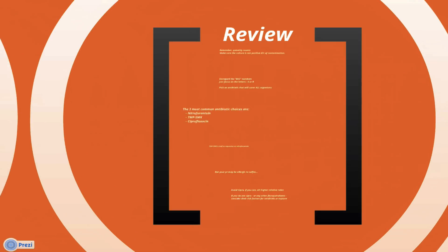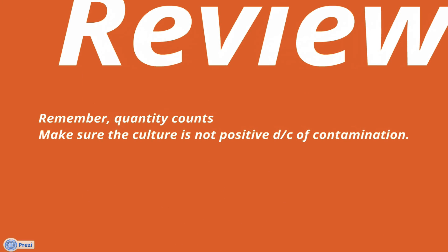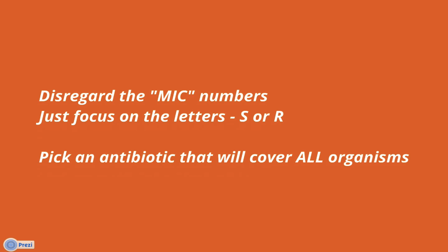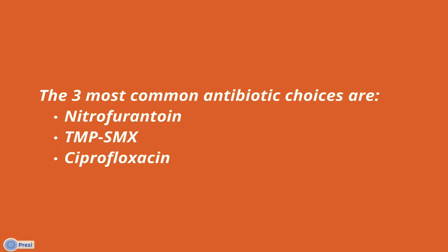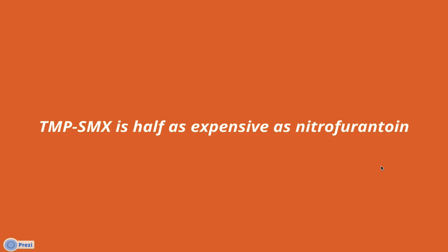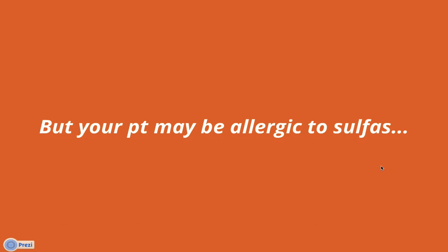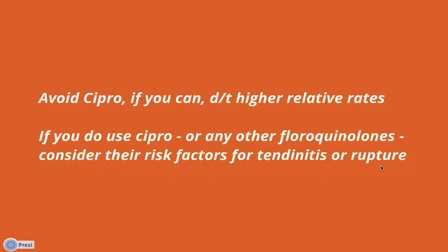Let's quickly review. Remember that the concentration of the infection counts because it can give you a sense for whether bacteria were growing because of a dirty catch or contamination, or whether there was truly an infection. Disregard the minimal inhibitory concentration numbers — they don't mean very much for selecting an antibiotic. Just pick one that's going to be sensitive for all the organisms that grew. Remember that nitrofurantoin, trimethoprim sulfamethoxazole, and Cipro are the three most common medications, and Cipro should probably be reserved for cases of suspected antibiotic resistance. Trimethoprim sulfamethoxazole is half as expensive as nitrofurantoin, but your patient may be allergic to sulfa, so don't forget to check their allergies. Avoid Cipro if you can, due to the relatively higher rates of Achilles tendon rupture or tendinitis.